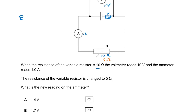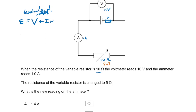We know that EMF equals V plus IR. Since we have 10 volts as our terminal PD, we don't need to expand further. EMF is 12 volts, so 12 equals 10 plus one times R. Therefore R equals 12 minus 10, which is two ohms. So we have the internal resistance.